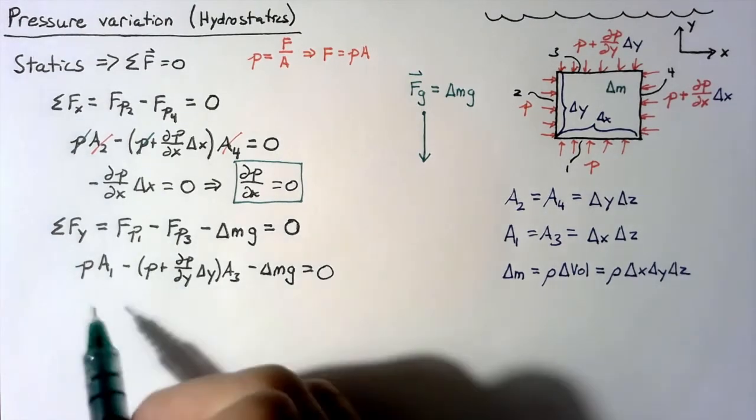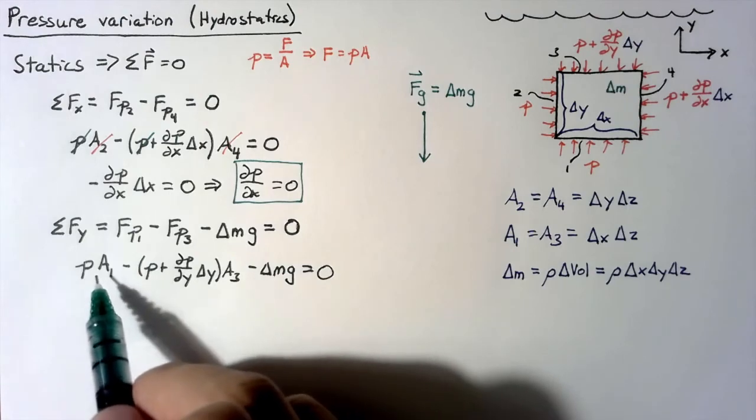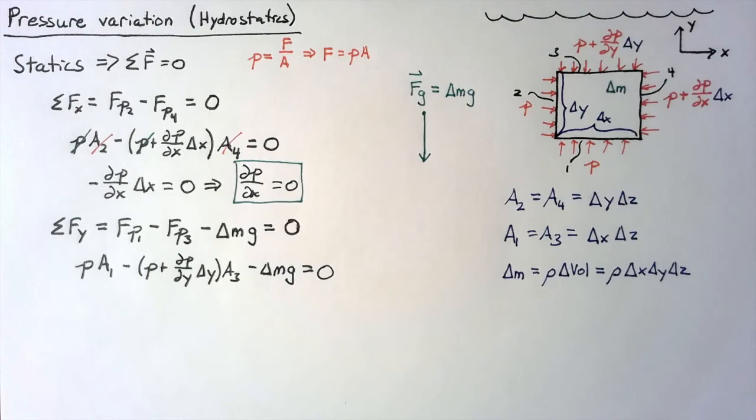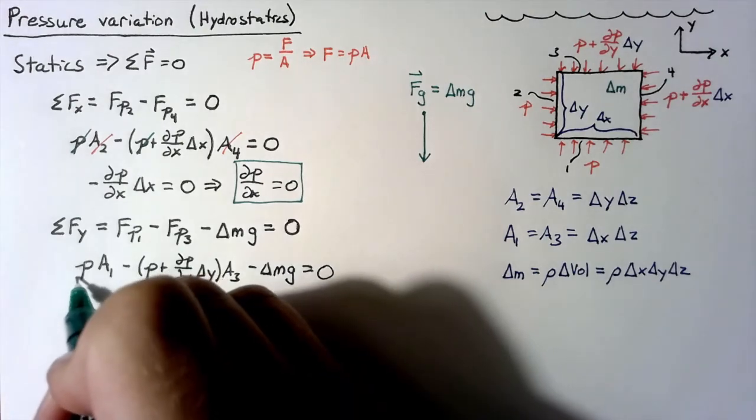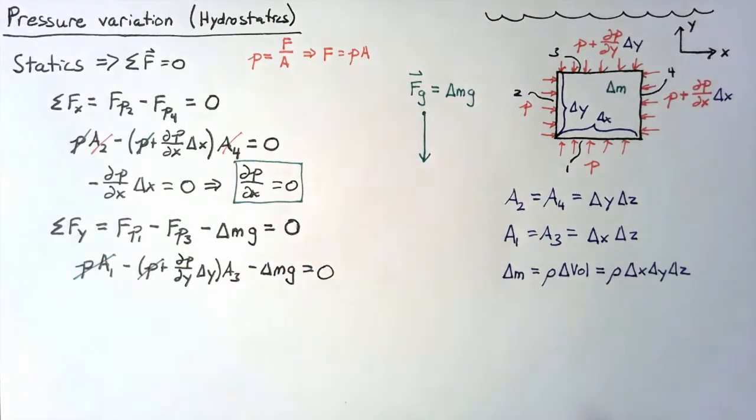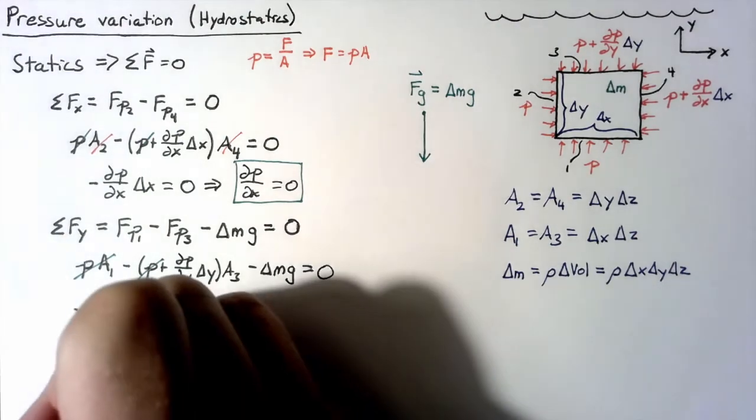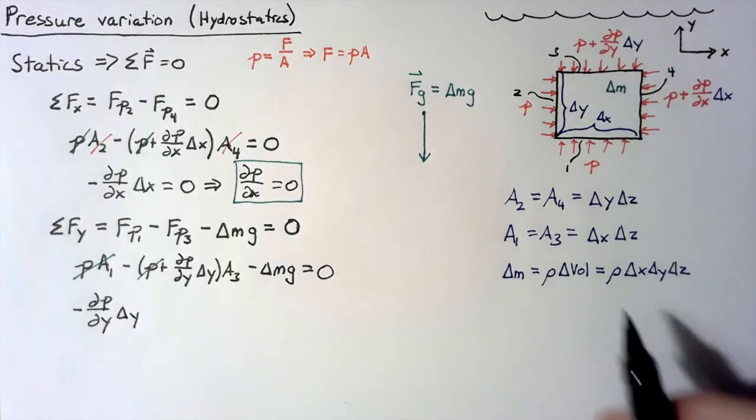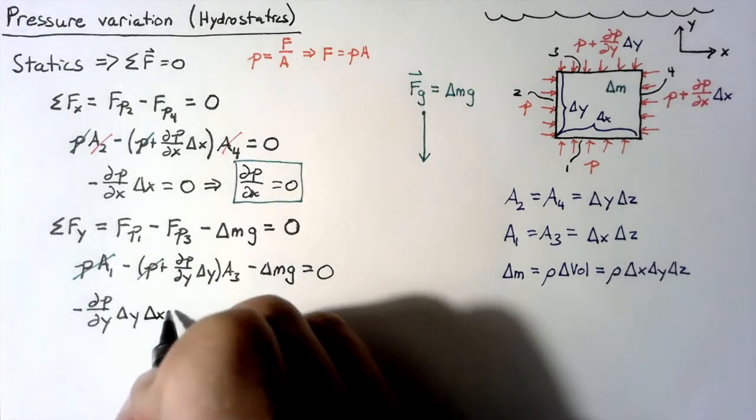Now before we move on, let's just note that p multiplied by a1 minus p multiplied by a3 is going to be equal to 0. Those two values are going to cancel out, so we can get rid of both of those. And so we'll end up with a negative dp dy multiplied by delta y multiplied by this a3, which was the delta x, delta z.